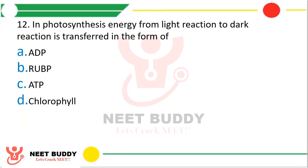Question 12. During the process of photosynthesis, energy from the light reaction to the dark reaction is transferred in the form of — ADP, RuBP, ATP, or chlorophyll? The correct answer is option C, ATP.